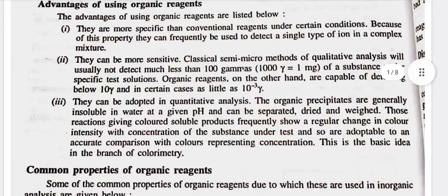They can be adopted in quantitative analysis. The organic precipitates are generally insoluble in water at a given pH and can be separated, dried, and weighed. Those reactions giving colored soluble products frequently show a regular change in color intensity with concentration of the substance under test, and so are adaptable to an accurate comparison with colors representing concentration. This is the basic idea in the branch of colorimetry.